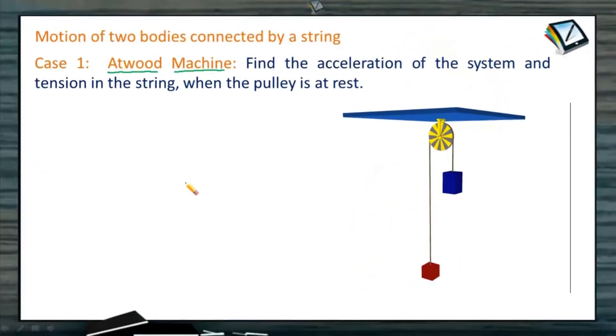Let us analyze when the pulley is at rest, how the two bodies are going to move. So let us consider this is rigid support. This is a pulley, which is at rest. Only rotation is possible.